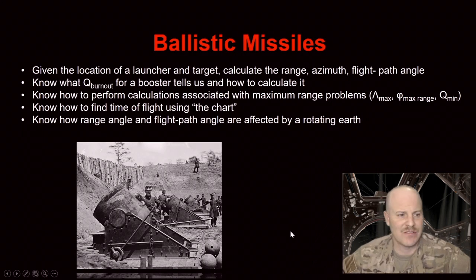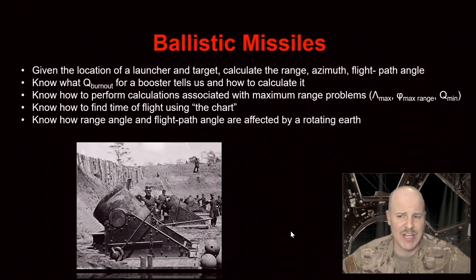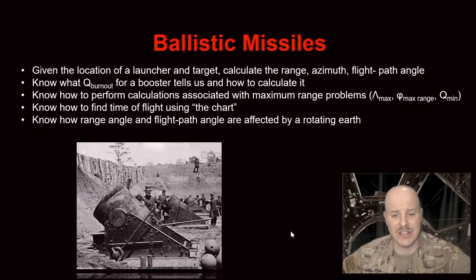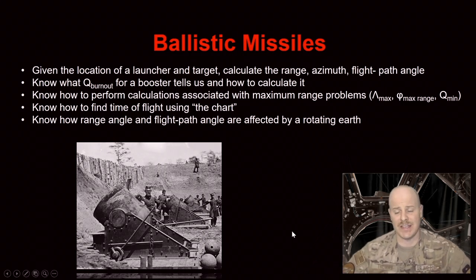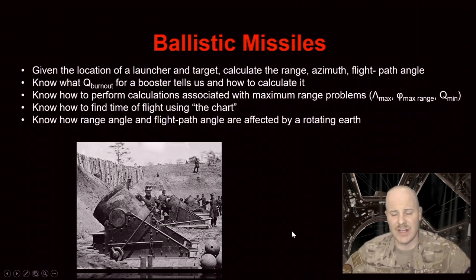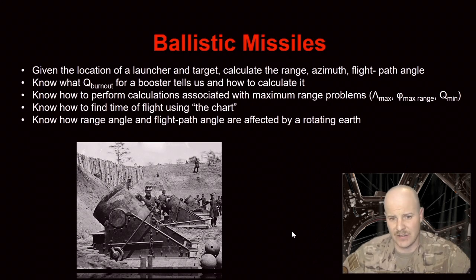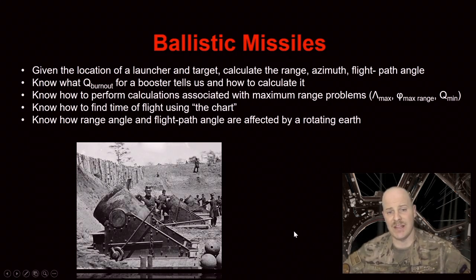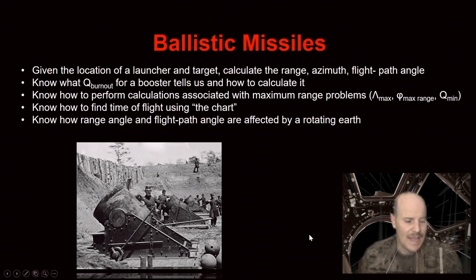Our first objective is that given the location of a launcher and a target, be able to calculate the range, azimuth, and flight path angle. Our next objective is to know what Q burnout is for a booster and how to calculate it. Third, we've got to know how to perform calculations associated with max range problems such as lambda max, phi max range, and Q min. The next objective is to know how to find the time of flight using the chart. Lastly, you should know how range angle and flight path angle are affected by a rotating earth.